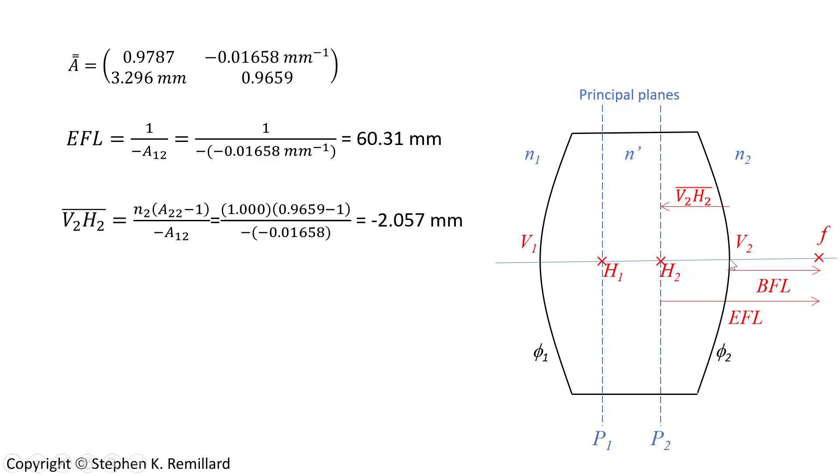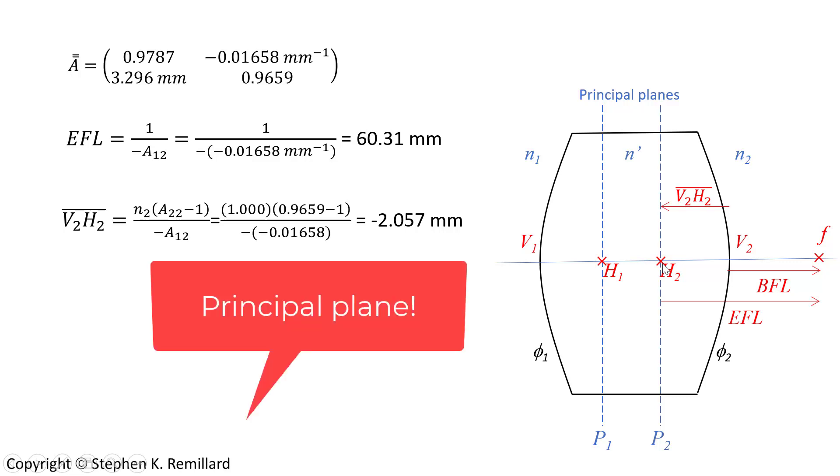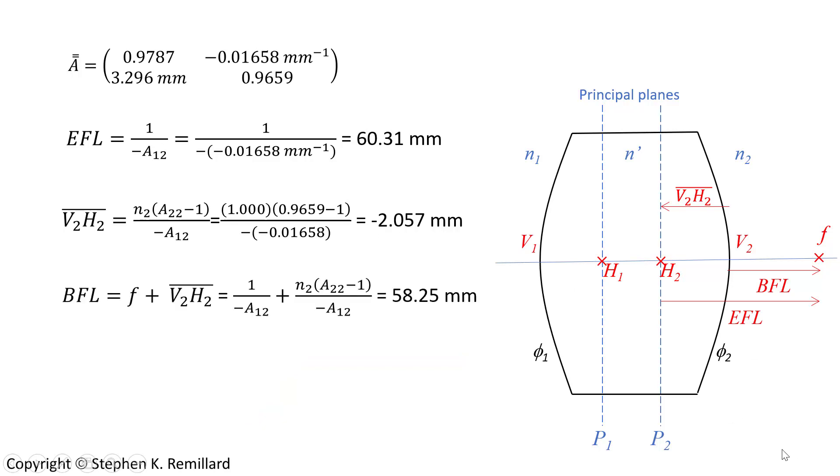The distance from the back vertex to the back focal plane is given by this expression, which I take out of Pedrotti, and we get minus 2.057 millimeters. That's quite a lot of precision there. The back focal length, that is 58.25 millimeters.